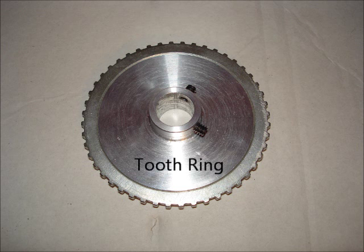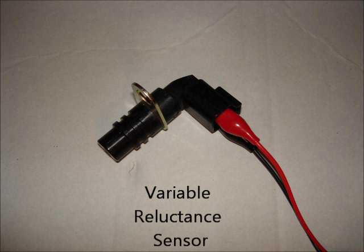Here's the tooth ring. This is a steel tooth ring with 48 teeth on it. Here's a variable reluctance sensor that measures the change in inductance as the tooth ring rotates.